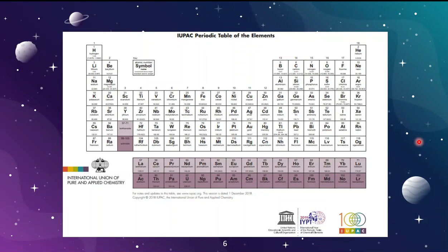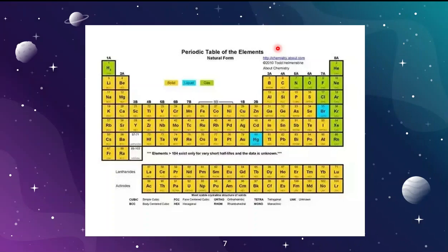This is a PRAC table released in December of 2018 by the International Union of Pure and Applied Chemistry. The PRAC table is one way we use to classify matter — it has all of the elements we know of. It can be further classified by states of matter at room temperature. The yellow blocks represent solids, mercury and bromine are the only elements that appear as liquids, and the green elements appear as gases at room temperature.